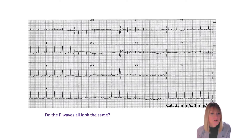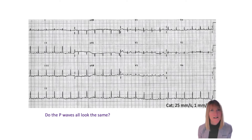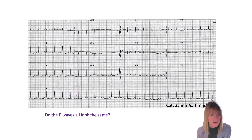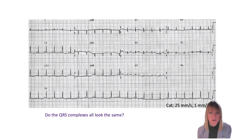Moving on to the next question: do the P's all look the same? By this we mean roughly 95% the same, because a little bit of variability is normal due to artifact or movement. So I really want to know if they more or less look the same. Focusing on those P waves, I'm prepared to say that yes, I think they all look pretty much the same. Do the QRS complexes all look the same? That's our next question, and applying that 95% rule, I would say yes — they all look relatively the same as each other. So that's important.